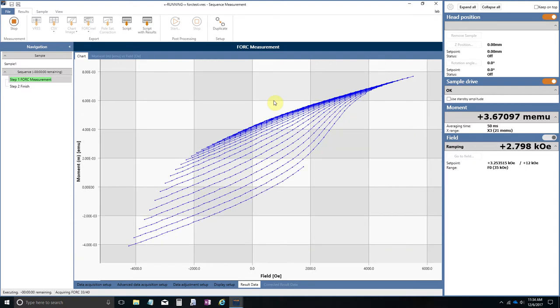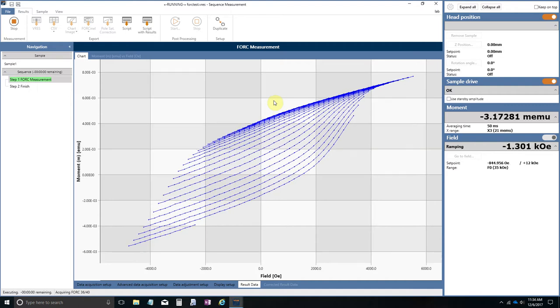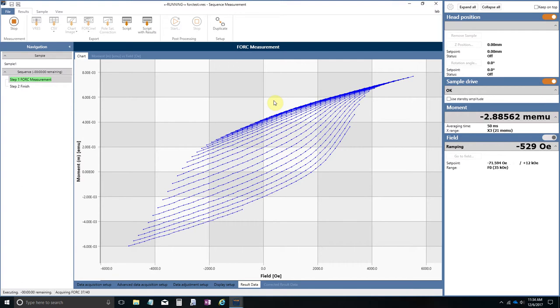So as you can see here, we're on FORC 35 out of 40. So this is finishing up. And this measurement took approximately four and a half minutes. Which is very fast for collecting a series of first-order reversal curves.